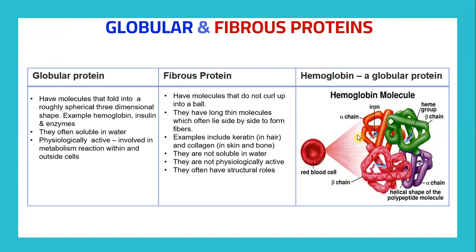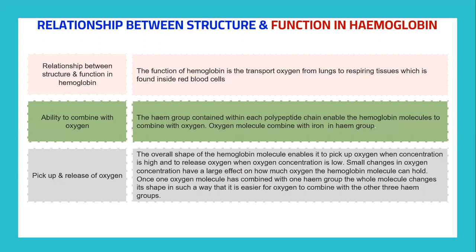You can see the structure of the hemoglobin molecule, which is composed of an iron-containing heme group, alpha chains, and beta chains, as well as the helical shape of the polypeptide molecule. This is viewed through the microscope inside the red blood cells. When we enlarge it, this is how the diagram looks.